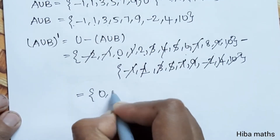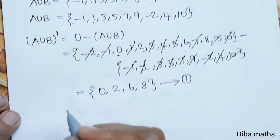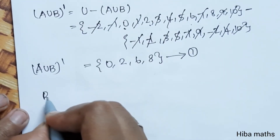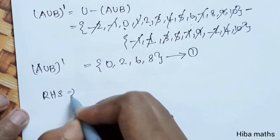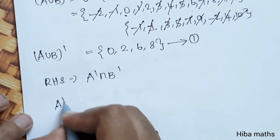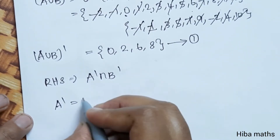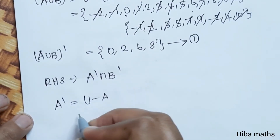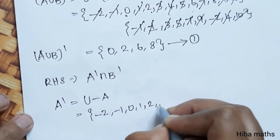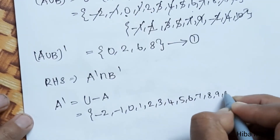The answer is {0, 2, 6, 8}. This is our first result — that is, A union B whole dash equals {0, 2, 6, 8}. Now we can do RHS. RHS is A dash intersection B dash. A dash is equal to U minus A. U = {-2, -1, 0, 1, 2, 3, 4, 5, 6, 7, 8, 9, 10}.